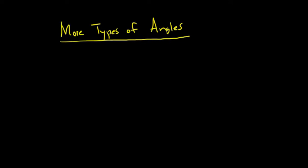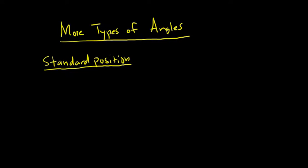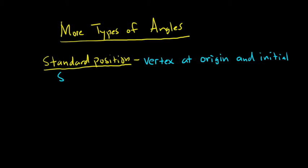There are these really important angles that are said to be in what's called standard position. An angle is in standard position if its vertex is at the origin and if its initial side is along the positive x-axis.